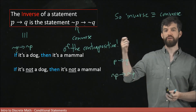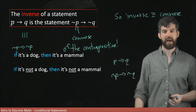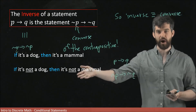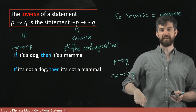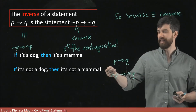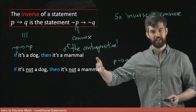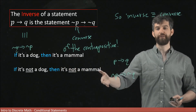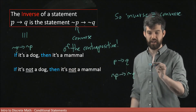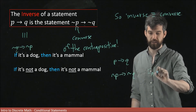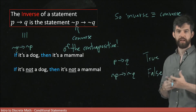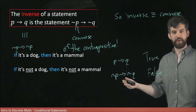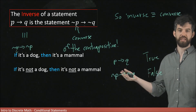Consider a cat: a cat satisfies 'it's not a dog,' so the condition is true. But the conclusion — 'it's not a mammal' — is false, because a cat is a mammal. So a cat is a counterexample where the condition is true but the conclusion is false, making the inverse statement false. Since the original statement is true and the inverse is false, we confirm that the inverse and the original statement are not logically equivalent.